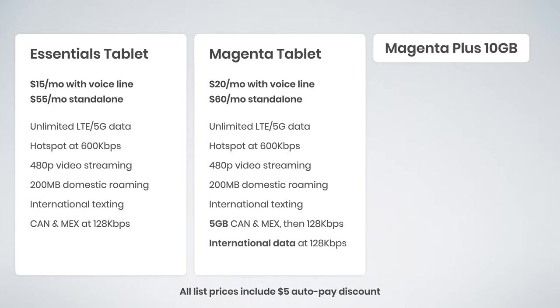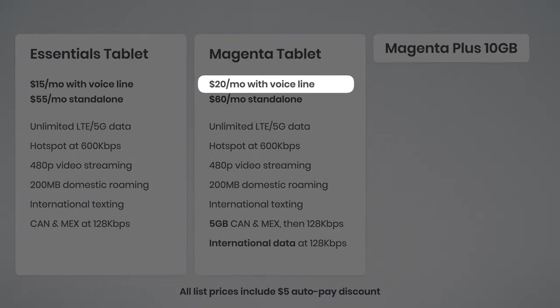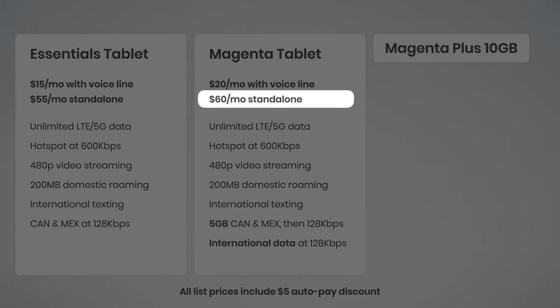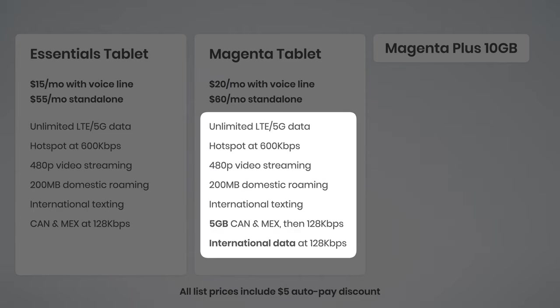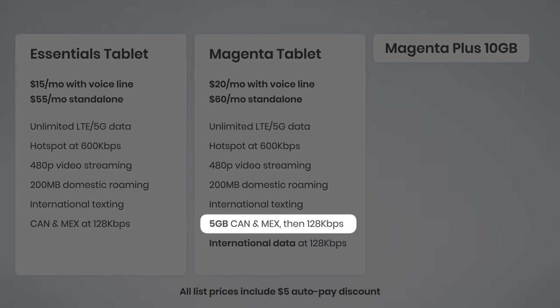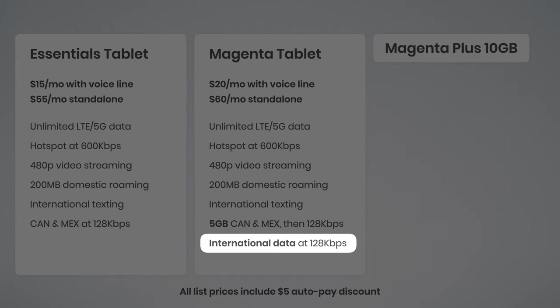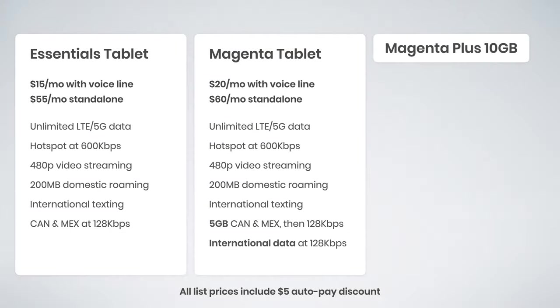Magenta for Tablets is $20 a month with an active voice line, or $60 a month as a standalone option. It includes the exact same features as Essentials, except for two key differences. The Canada and Mexico data is increased to 5 gigs of high-speed data before your speeds are slowed to 128 kilobits per second. Magenta for Tablets also includes unlimited international data at 128 kilobits per second, so you can use this plan if you travel abroad.